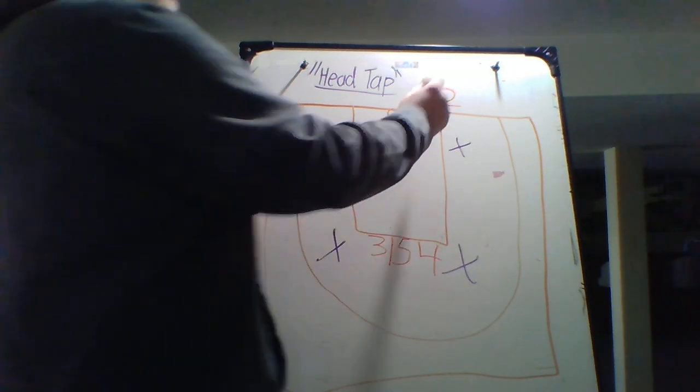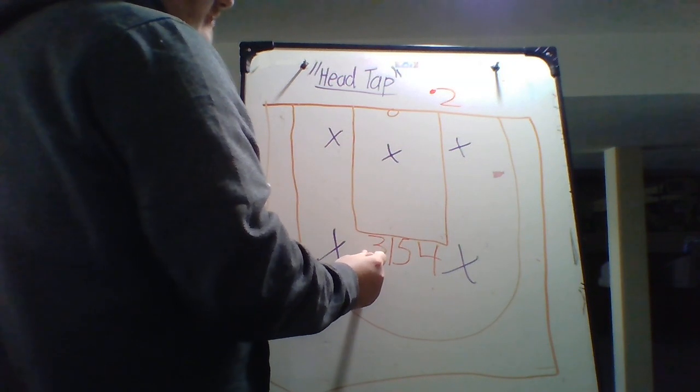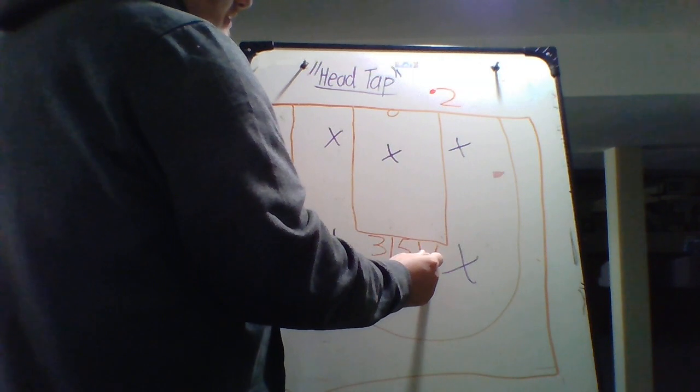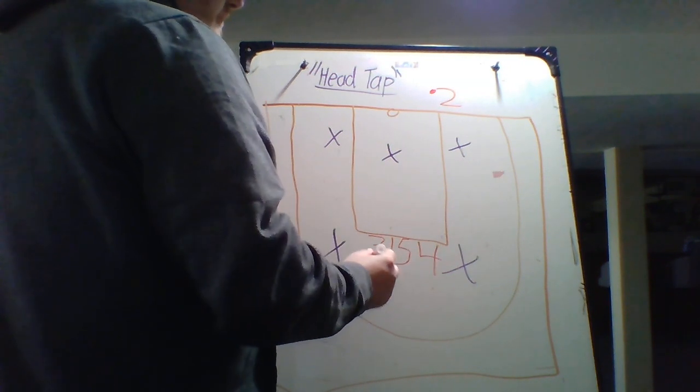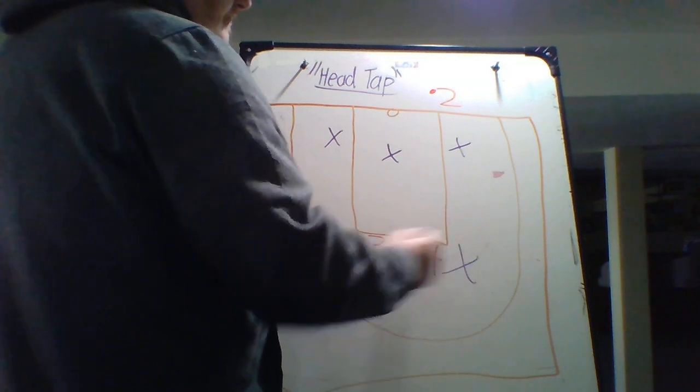So as you can see, we've got our two inbounding the ball. We've got our three on the outside, one and five in the middle, and four on the outside. So they're going to be shoulder to shoulder along the free throw line.